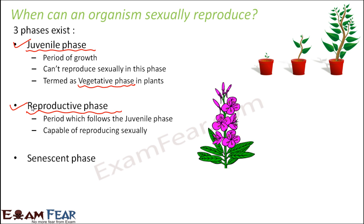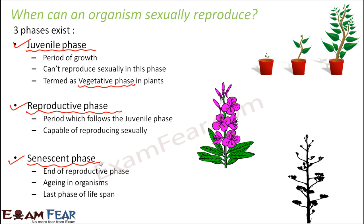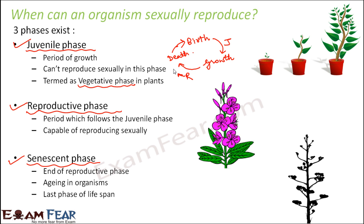The reproductive phase is followed by the senescent phase. In this phase, aging starts — it is the end of the reproductive phase. Once the organism enters this phase, aging occurs; it tends to become older and it is the last phase of the lifespan. So the entire life cycle of any organism — plant or animal — goes: birth, then growth, then death. The organism is born, grows to become mature, and then dies, giving birth to other organisms. From birth to growth is the juvenile phase; after growth is the reproductive phase; after the reproductive phase is the senescent phase, which finally leads to death.